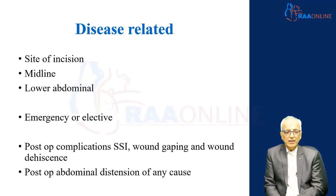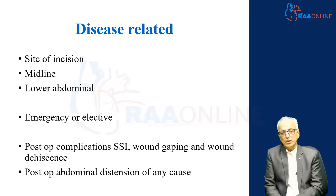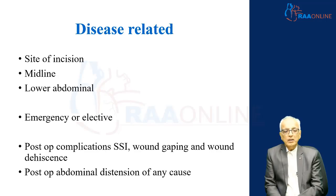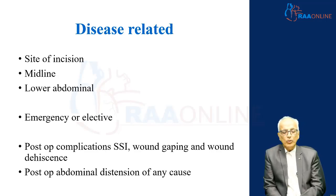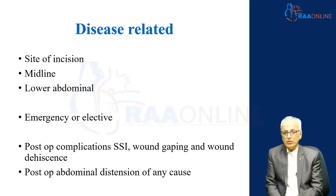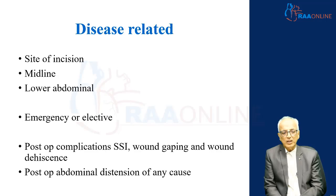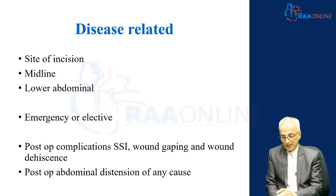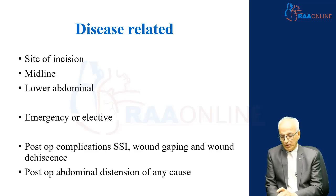Coming to disease-related factors: the site of incision is important — midline incisions are more prone to incisional hernias. Lower abdominal incisions are more prone because of shear hydrostatic pressure causing divarication and pulling pressure at the suture site. Emergency surgeries show a higher incidence of incisional hernias than elective surgeries. Postoperative complications such as surgical site infection, wound gaping, or wound dehiscence obviously lead to incisional hernias. Persistent postoperative abdominal distension can put a lot of tension on the site of closure and lead to incisional hernias.